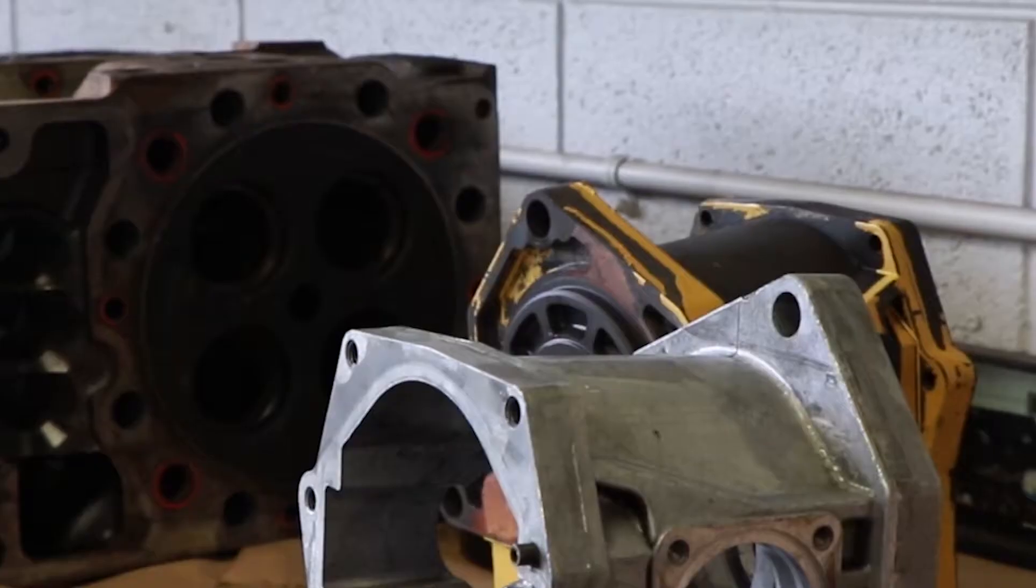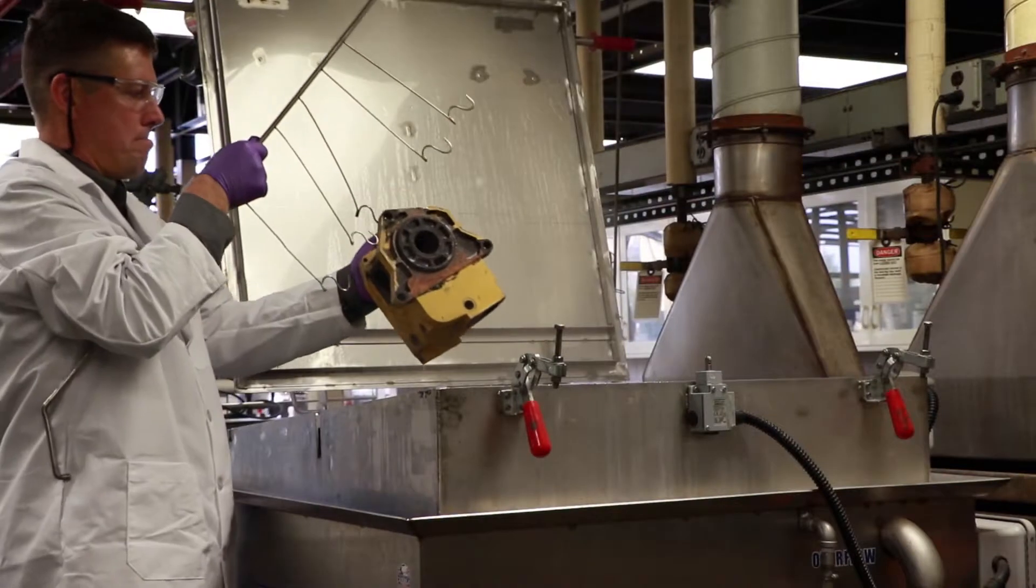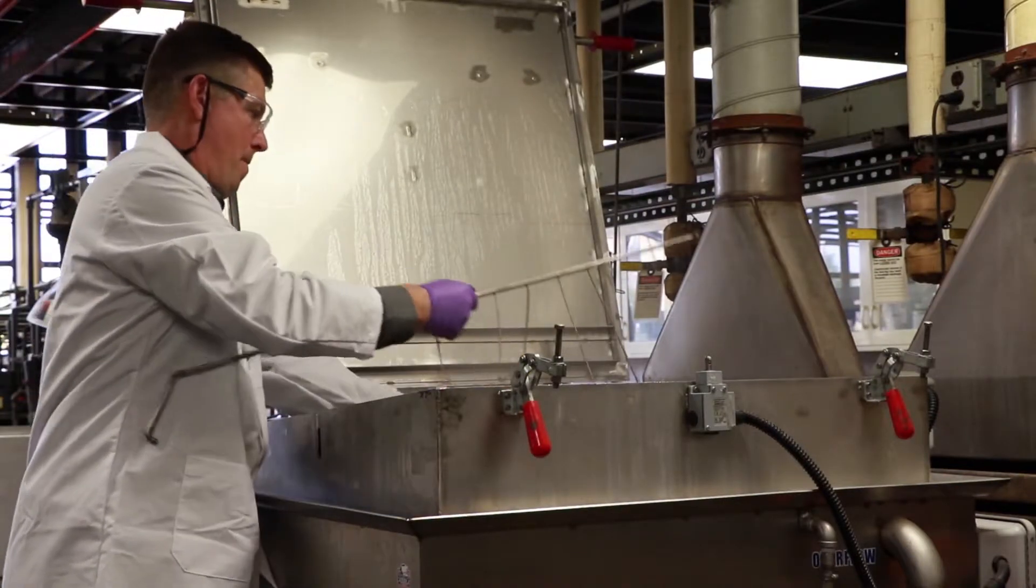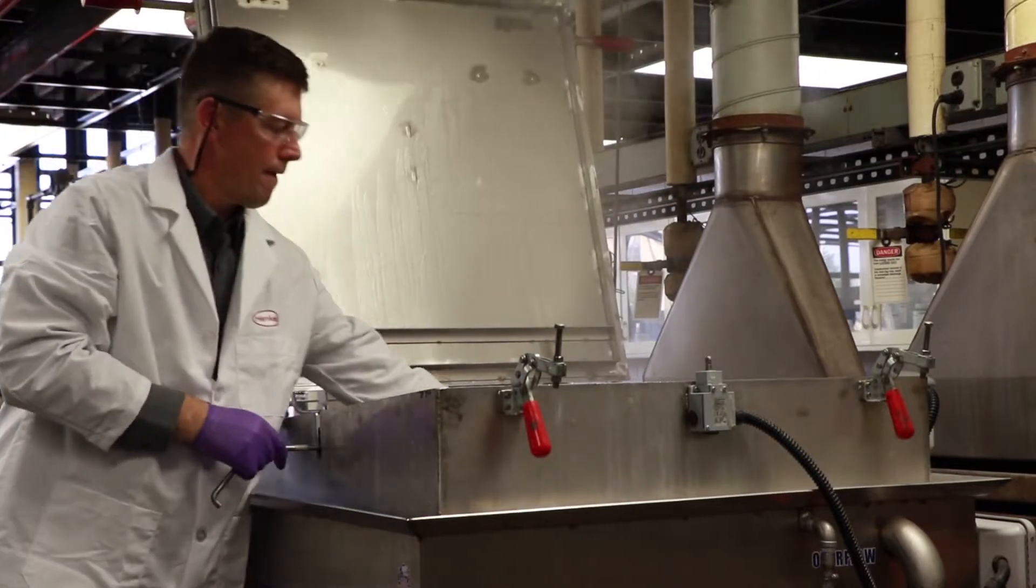Remanufacturing involves a number of operational steps beginning with disassembly of the core product. All components are first cleaned to remove any residual paint, rust, dirt, grease, oils, carbon buildup, coking and other contaminants. Each component is then thoroughly inspected.